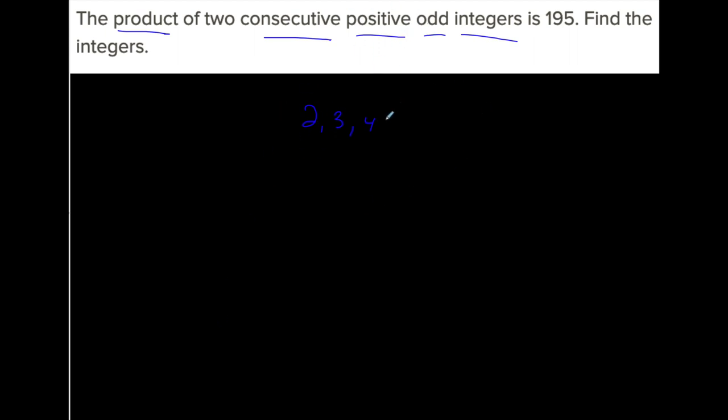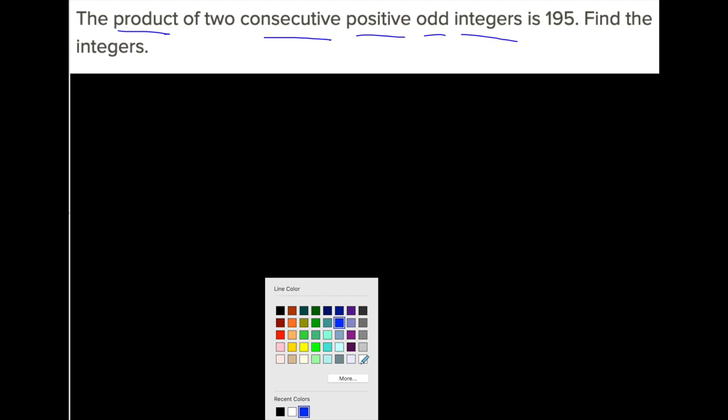Positive numbers are greater than zero. Odd integers—three, five, seven, things like that. We want the product of two unknown consecutive positive odd integers that we have to deal with.